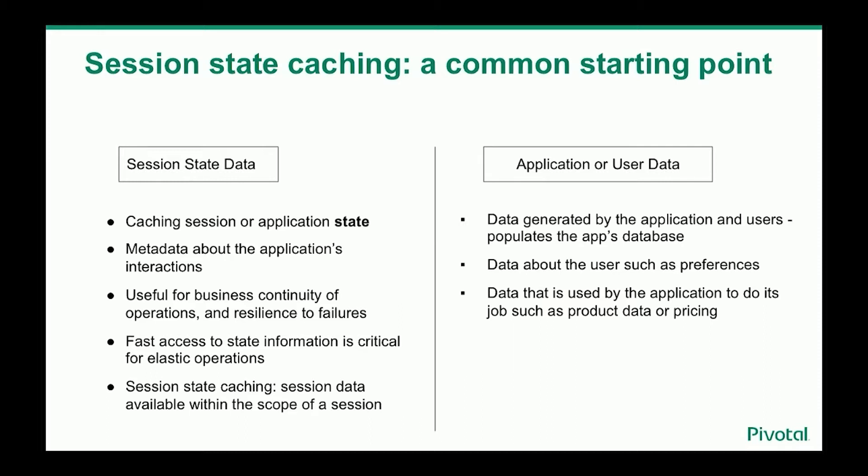Putting session state data in a cache makes sense because it gives you very fast access to this information. If there is a need to access this, you want to make sure it occurs fast and is not disruptive to end users. Session state data exists within the scope of a session — so when a session is over, the data is gone. It's only needed within the scope of a session.